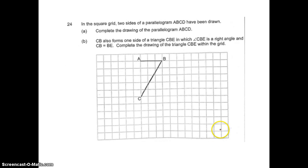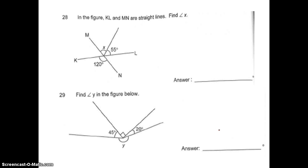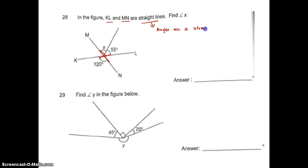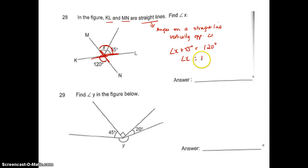Questions 24 to 27 we will do in class. Let's look at question 28. In the figure, KL and MN are straight lines. Whenever they give straight lines, I must identify angles on a straight line or vertically opposite angles. These two lines cross each other and they are vertically opposite. So angle X plus 55 degrees equals 120 degrees. Angle X equals 120 minus 55, which is 65 degrees.